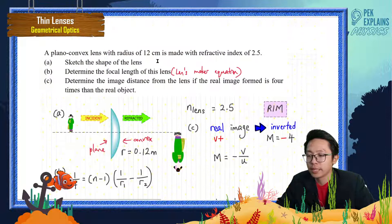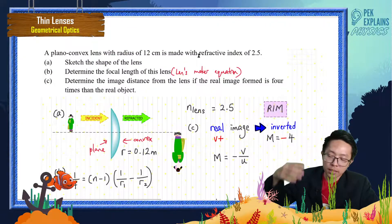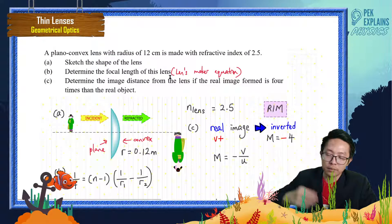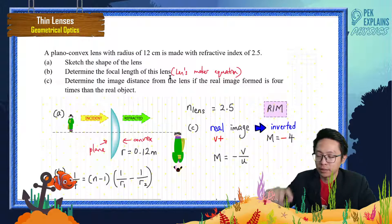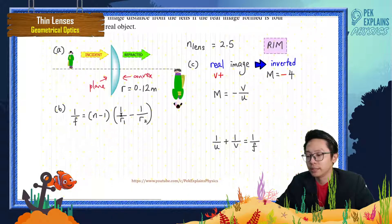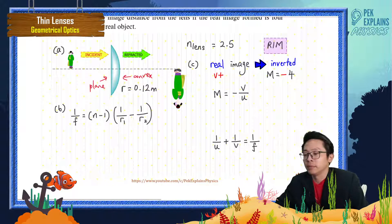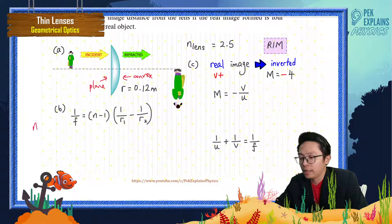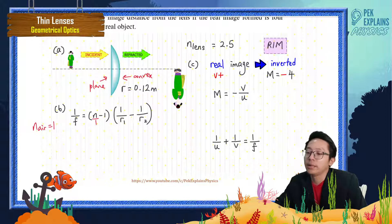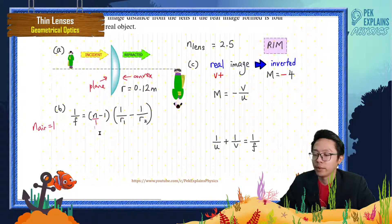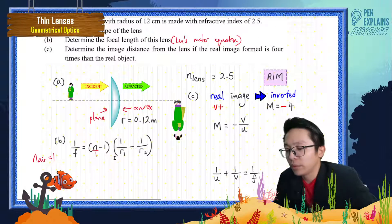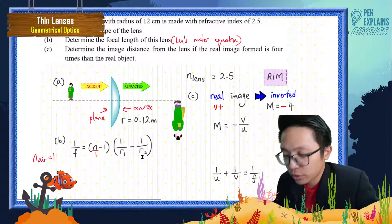This lens is placed in air — he didn't say it's deep inside water or oil, so we put n_air equal to one. That means the formula becomes (n_lens / n_air) minus one, which simplifies nicely. Now I need to find R1 and R2.